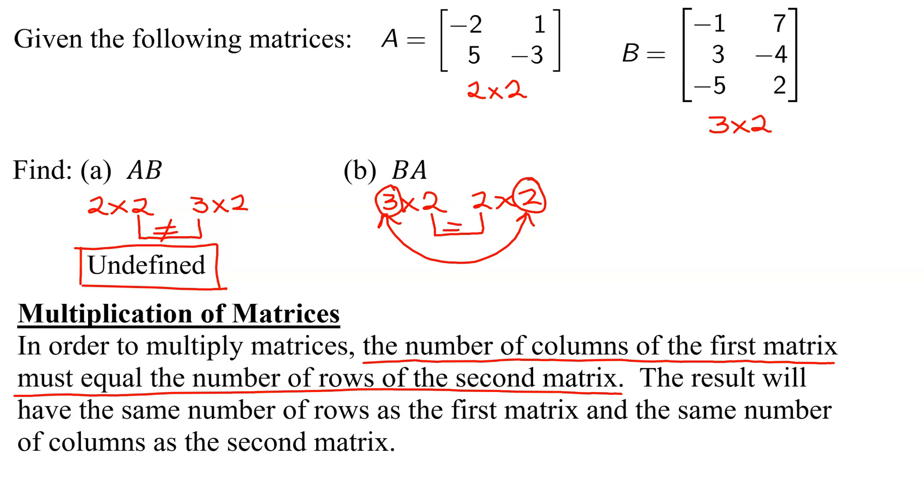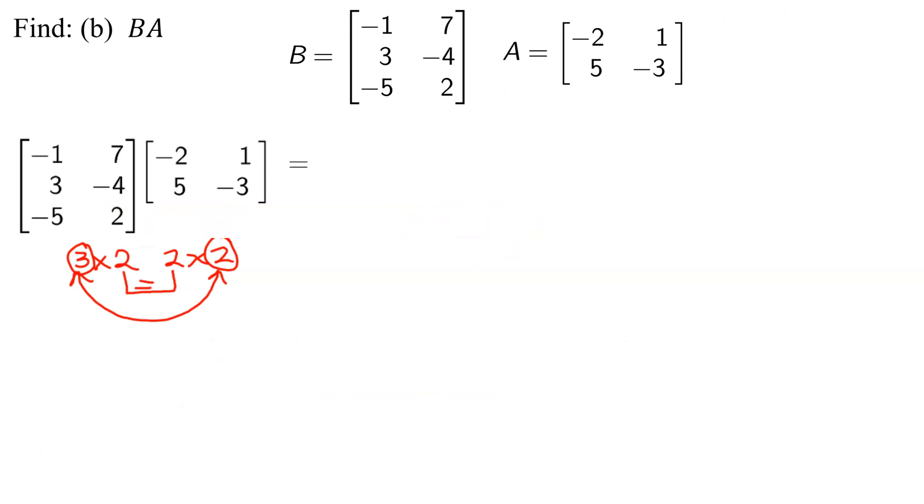Here is matrix B and matrix A. We know we can multiply them, and the answer will be a three by two matrix. So I'm going to put in a blank three by two matrix with plenty of room for calculations. I'm going to label each position. This element is in row one, column one. Row one, column two. Row two, column one. Row two, column two. Row three, column one. And row three, column two.